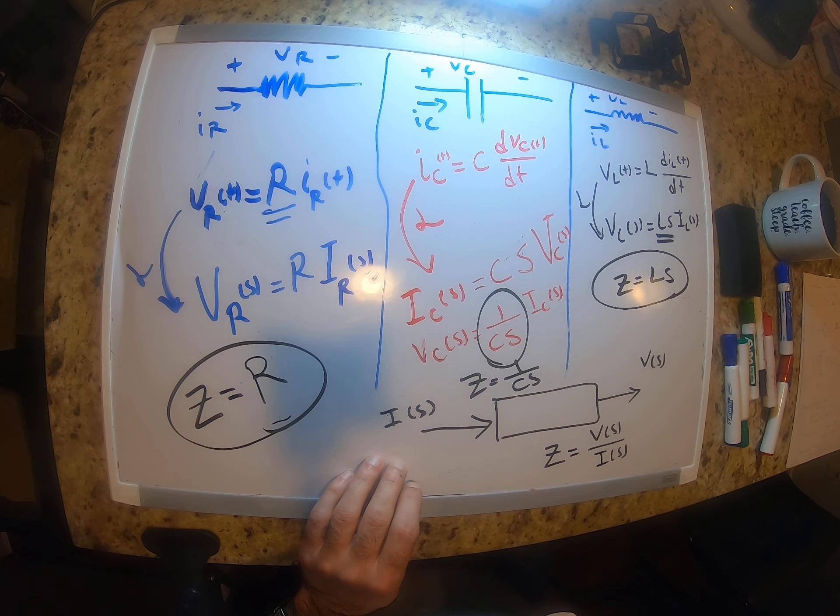For the inductor, Z is equal to Ls. You can look at impedance as a transfer function that converts an input current into the voltage across the element. It's much easier in many cases to work in the frequency domain.